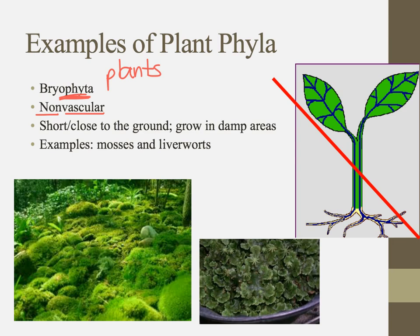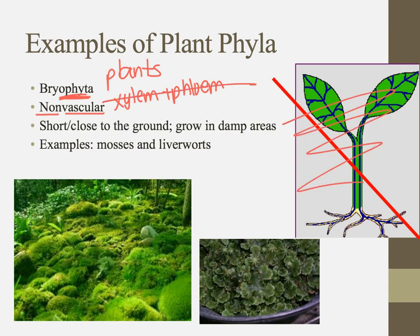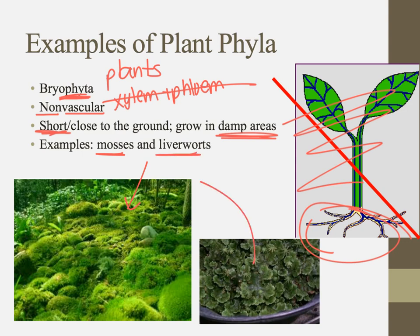Bryophytes are non-vascular. If you're a vascular surgeon you work on blood vessels; the arteries and veins of plants are called the xylem and phloem, which transport materials through plants. Bryophytes don't have those, so they get water basically through osmosis. That's why they're short and close to the ground, and grow in damp areas — they lack specialized tissue to deliver water throughout the plant. These are our mosses and liverworts, which you'll notice grow in bogs and other damp areas.